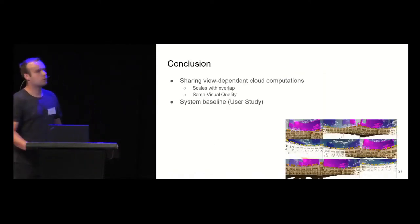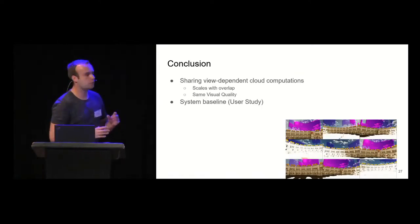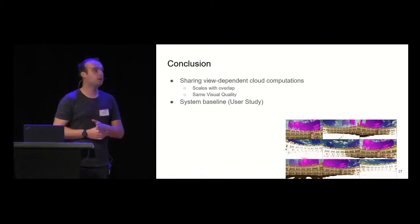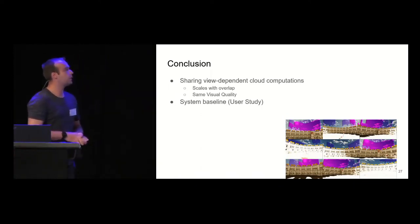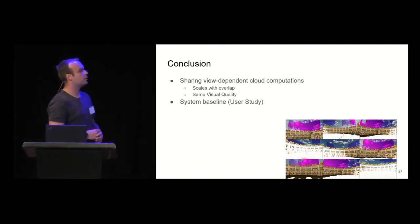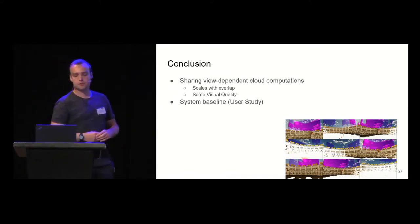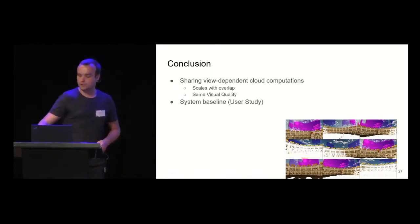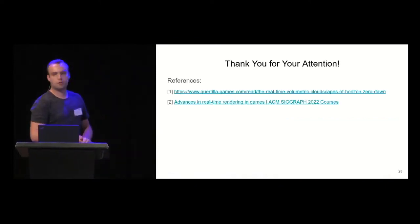With this, I want to conclude my talk. What we show in our work is how to efficiently share view dependent data in a view independent manner. We show that it scales with the overlap and has the same visual quality when you don't apply a mip-bias. Even with some form of mip-bias, you can still achieve quite similar perceived quality. Also in the paper, we have system-based baselines if you want to implement such a system, which can be a good guideline when starting implementing this. Thank you for your attention. We're looking forward to your questions.